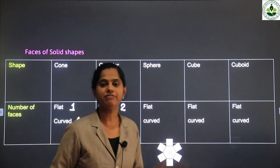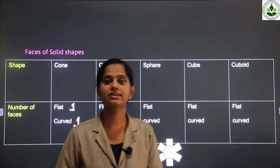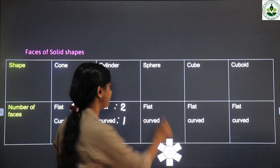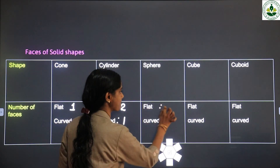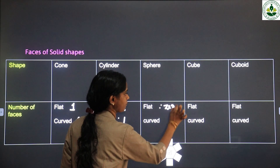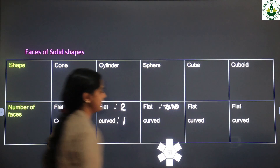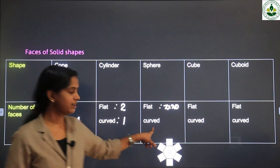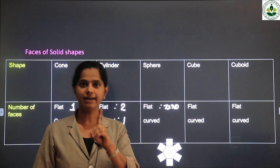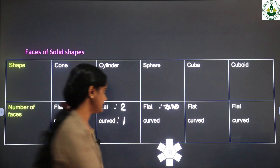Sphere — how many flat surfaces? Zero. How many curved surfaces? Only one curved surface.